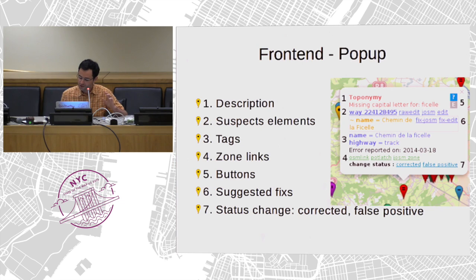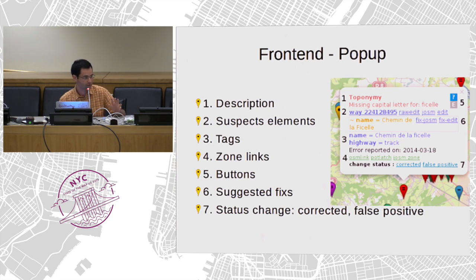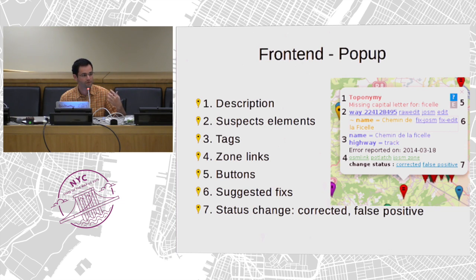Once you correct it, you can click on 'corrected' or 'false positive.' Corrected is when you've done the job and it's fine. False positive is when Osmose reports an error but it's not actually an error. You can signal it so we can fix the detector and improve the list of errors.